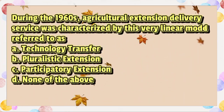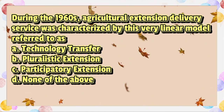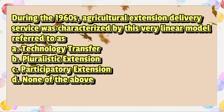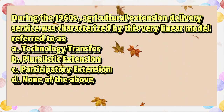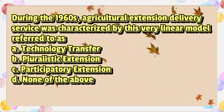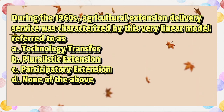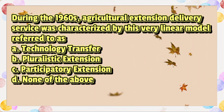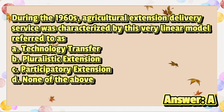During the 1960s, Agricultural Extension Delivery Service was characterized by this very linear model, referred to as: A. Technology Transfer. B. Pluralistic Extension. C. Participatory Extension. D. None of the above. The answer is letter A.